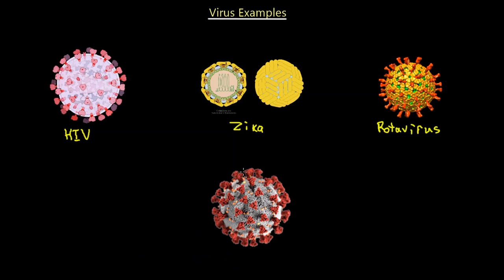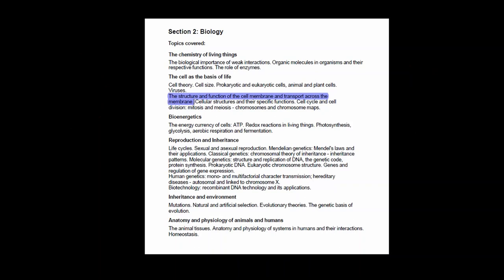The final virus — you can probably guess its name — is SARS-CoV-2, the one we're currently having trouble with. That concludes our video about viruses. Much of this information was gathered from KhanAcademy.org, so credit to Sal and his team. In the next lecture we'll look at the structure and function of the cell membrane and transport across membranes.